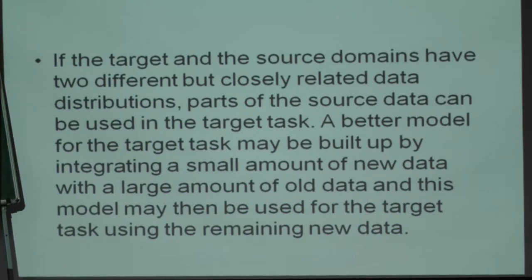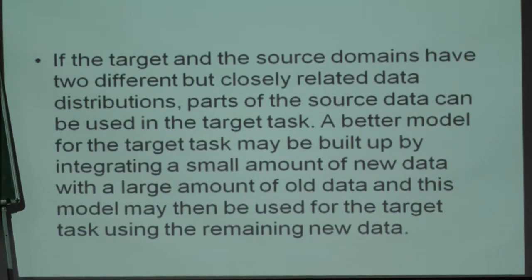If the target and source domains have two different but closely related data distributions - different at least in terms of parameter values but closely related - then parts of the source data can be used in the target task. You can develop a better model for the target task by combining data from different source domains with appropriate selection and weighting. Such a better model can be built by integrating a small amount of new data.